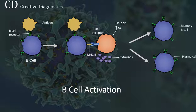Released into the blood, antibodies lock on to matching antigens. The antigen-antibody complexes are then cleared by the complement cascade or by the liver and spleen.